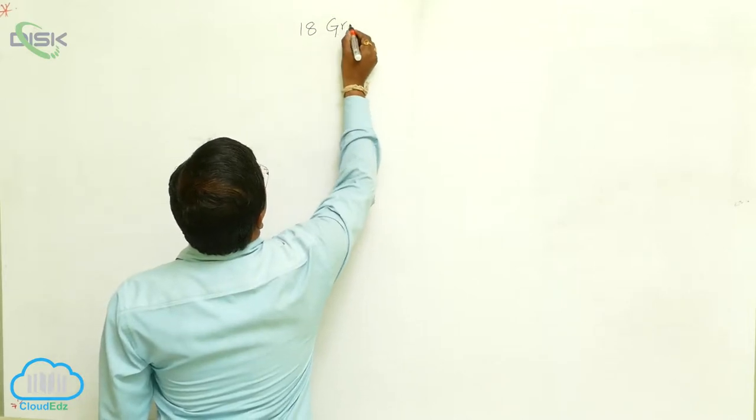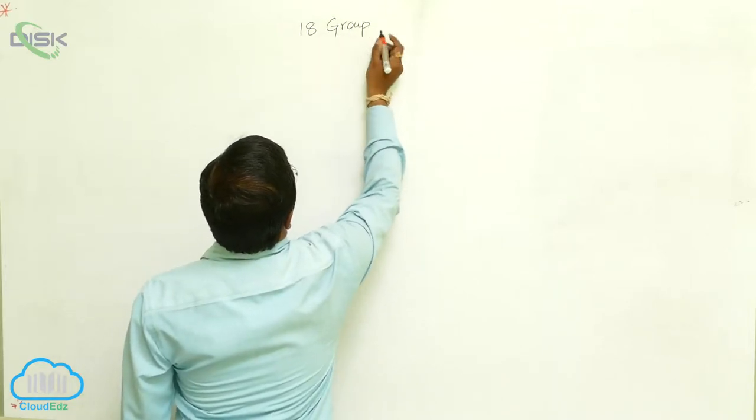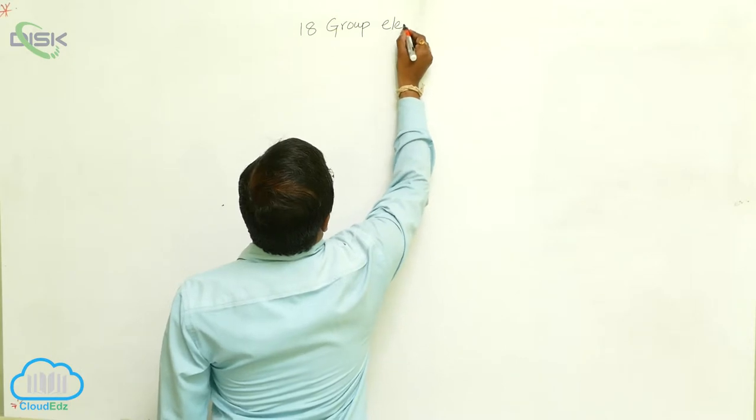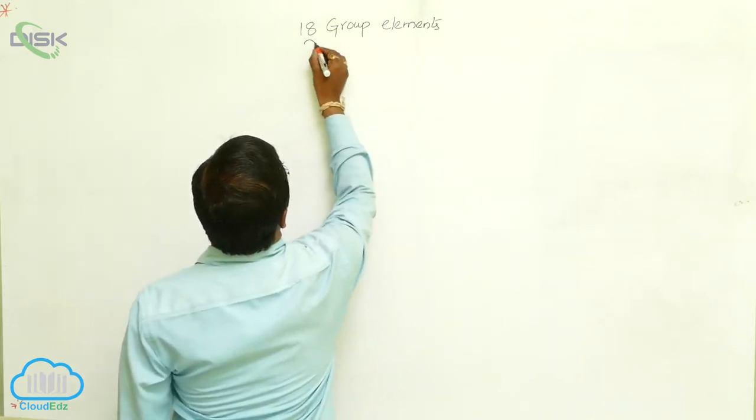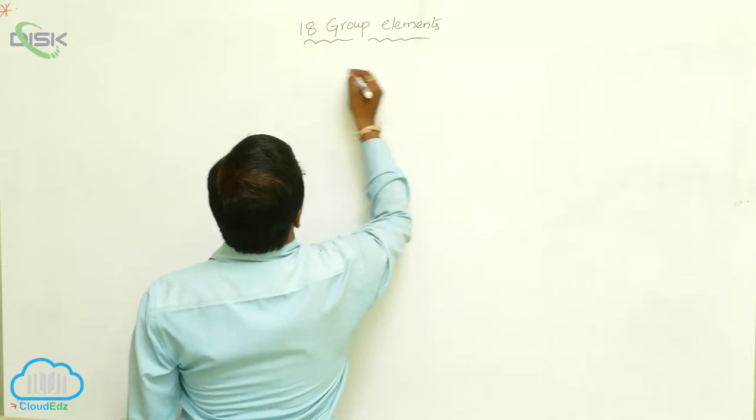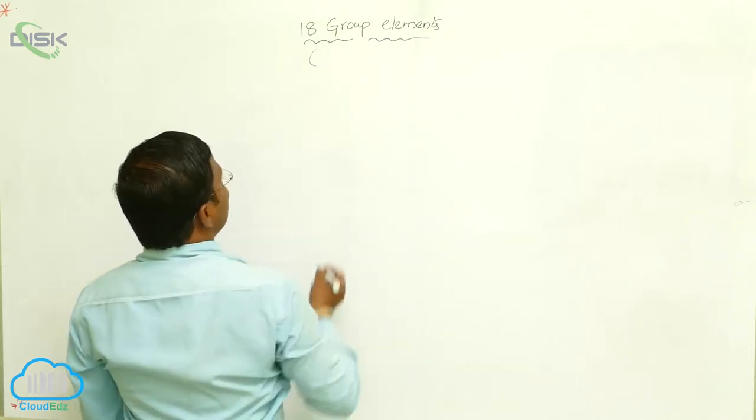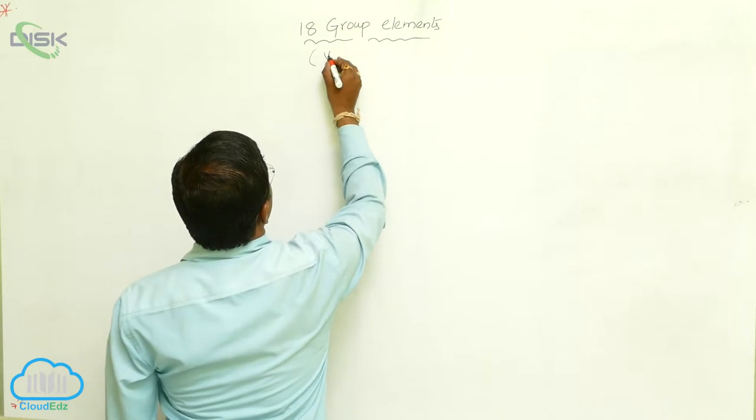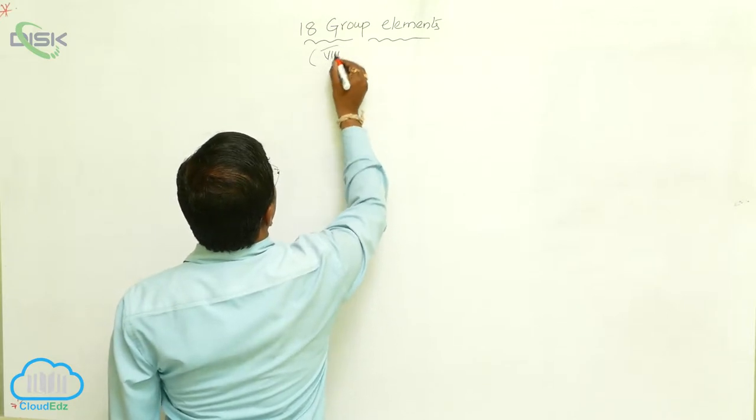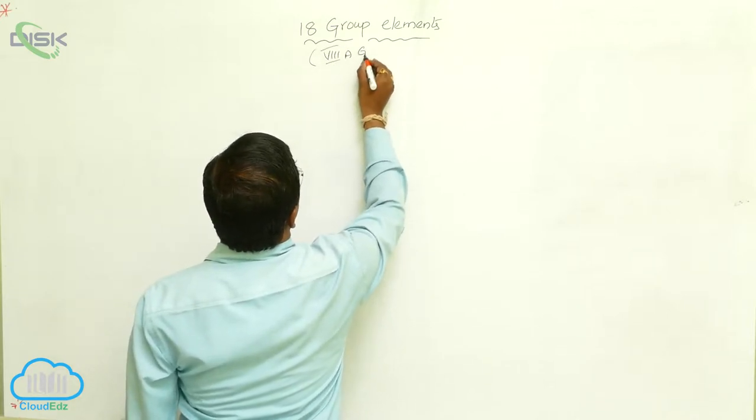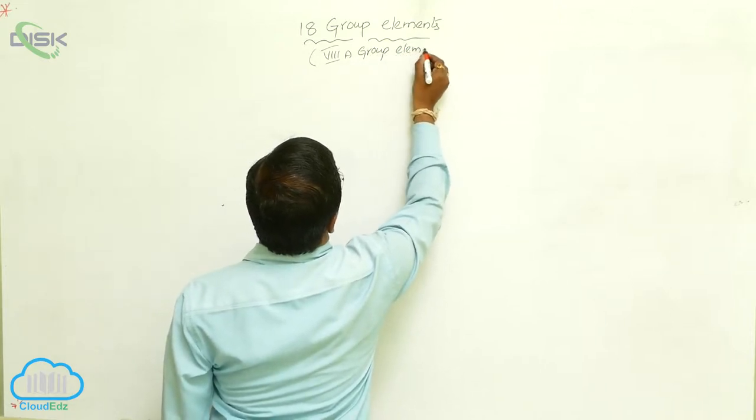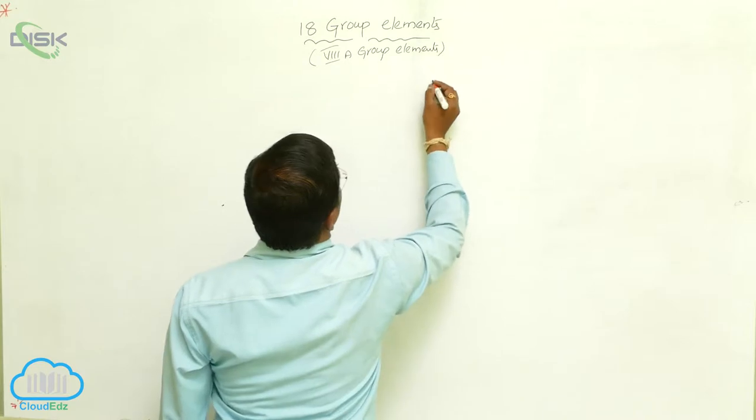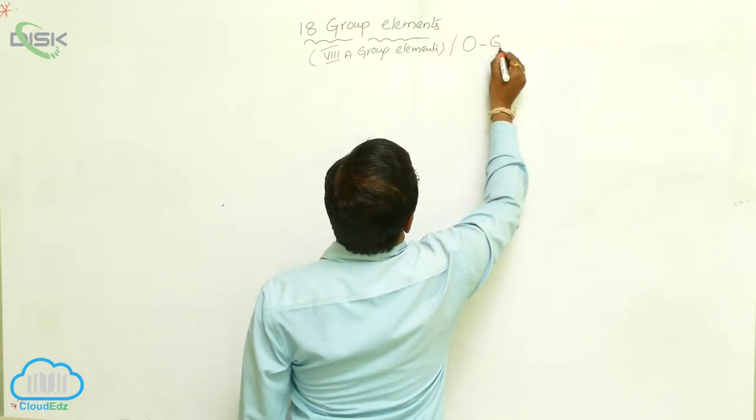18th group elements. So remember, these elements are also called as 8th A group elements. 8th A group elements are 0 group elements.